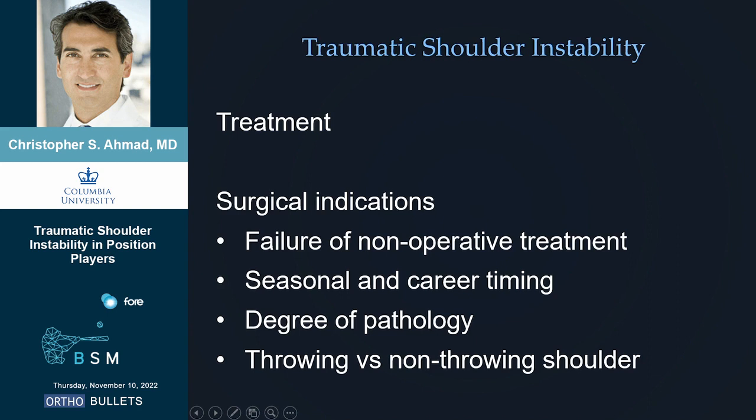The surgical indications: the purest indication for surgery is they tried to get better without surgery and it didn't work. But seasonal timing and career timing play such a big factor — it doesn't matter if you're in high school, college, professional, or free agent. It depends where you're going with your career timing. The degree of pathology matters too — more pathology means more likely that they're going to fail nonoperative treatment. The throwing shoulder is under more demands.